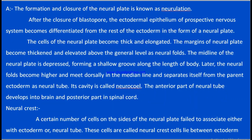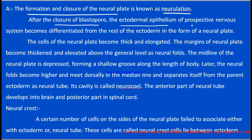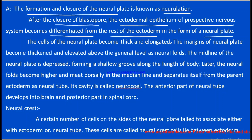Now it is time to write the formal answer. First, we define neurulation: neurulation is the formation and closure of the neural tube. After the closure of the blastopore, the ectodermal epithelium of the prospective nervous system differentiates. If it differentiates in the form of the neural plate, then the neural plate becomes thick and elongated.